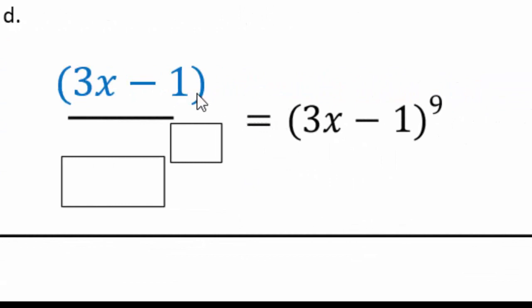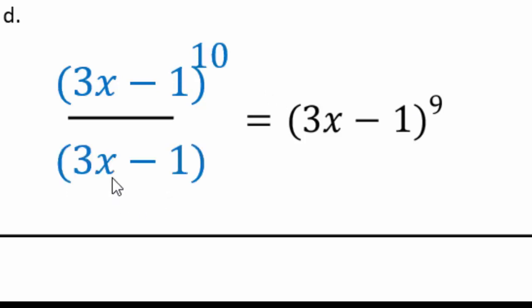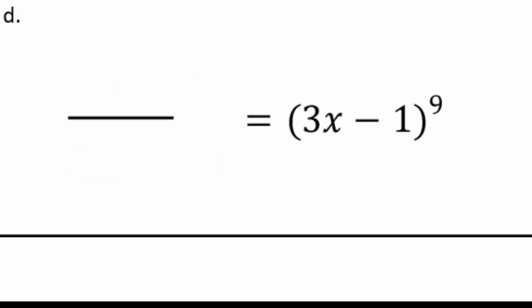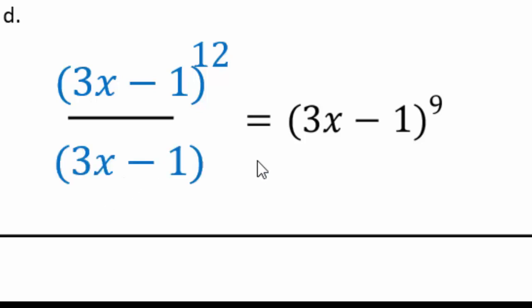Let's look at the next one. The base is 3x minus 1, because you have 3x minus 1 to power 9 as the answer. I can pick whatever power I want — let's pick 10. Then I just need one more 3x minus 1, so the denominator would be 3x minus 1 to the 1. Try another one: replace the 10 and the 1 with different powers. If I pick 12, to get 9 I would need 3 more — so the denominator would be 3x minus 1 to the 3rd. Good job!